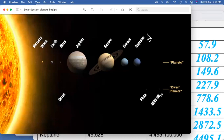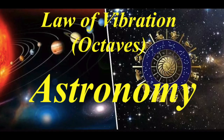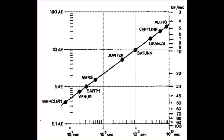Hello everyone, this is George Gurjev. Law of 3, Law of 7 series — this is going to be the 9th video, and slowly and gradually we will start applying what we have learned in Law of 3 and Law of 7 towards astronomy. This session is going to be very important because once you understand this fundamental part, we are going to measure astronomy in terms of logarithmic tables.